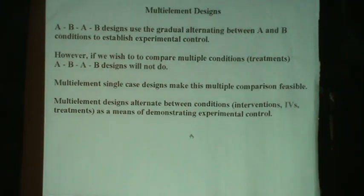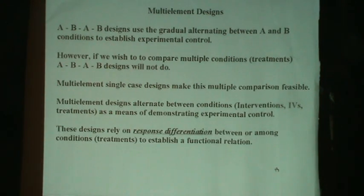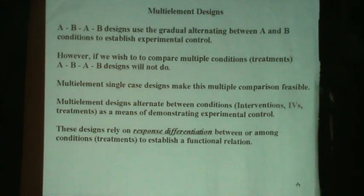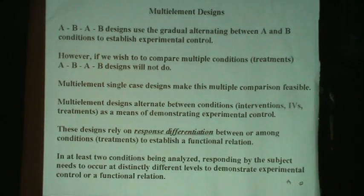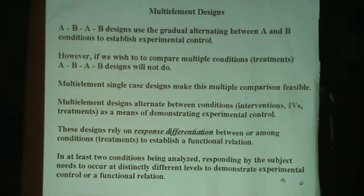Multi-element designs alternate between conditions, interventions, independent variables, or treatments. The interventions are alternated back and forth as a means of demonstrating experimental control, and experimental control relies on response differentiation. There needs to be a distinct difference between how participants respond to one treatment as opposed to how they respond to the other. If we have this response differentiation, then we can establish a functional relation.